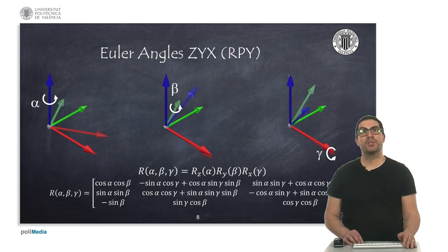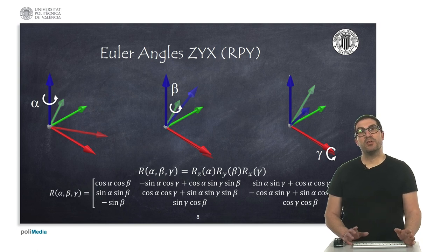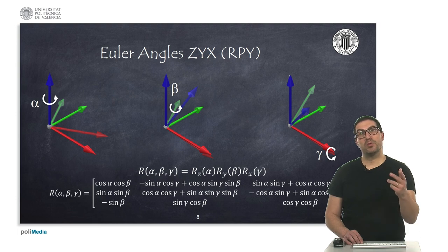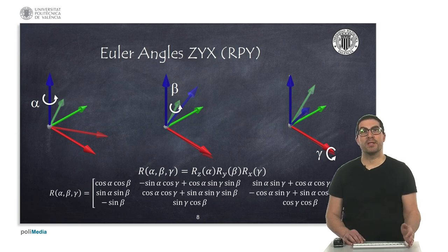And finally, here we see another example of a rotation with Euler coordinates Z, Y, X. This representation is indeed equivalent to the roll-pitch-yaw angles, denoted by the letters R, P, Y. This is a representation that is frequently used in nautical applications to describe the orientation of, for instance, drones or planes.